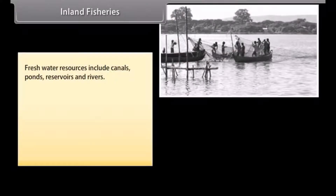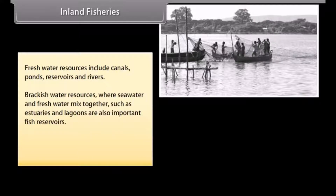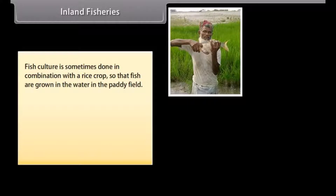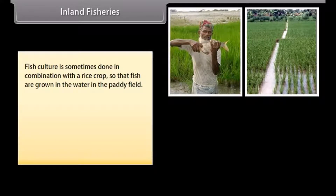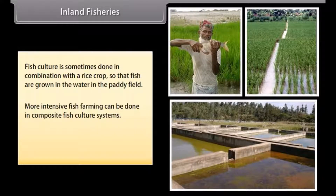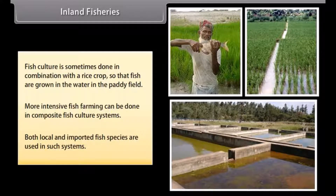Fresh water resources for inland fisheries include canals, ponds, reservoirs and rivers. Brackish water resources, where sea water and fresh water mix together — such as estuaries and lagoons — are also important fish reservoirs. Aquaculture refers to capturing fish in inland water bodies. Fish culture is sometimes done in combination with rice crops, so that fish are grown in the water in paddy fields. More intensive fish farming can be done in composite fish culture systems, where both local and imported fish species are used.